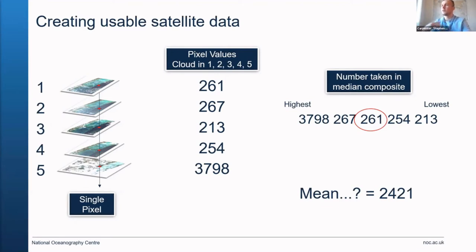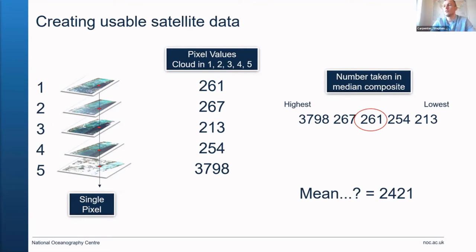When we take a median composite, we effectively put all these values for a single pixel in order and then take the middle value — in this case it'll be 261. Another way of merging this data would be to take a mean, but if we were to do that, we'd end up with a value of 2421, which is not what we want. We want the benthic habitat cover, which is around 250 here, so a mean is just not appropriate.